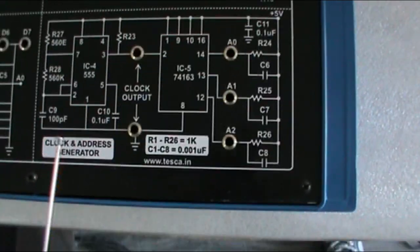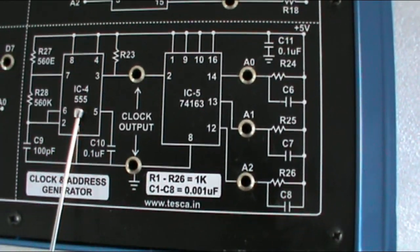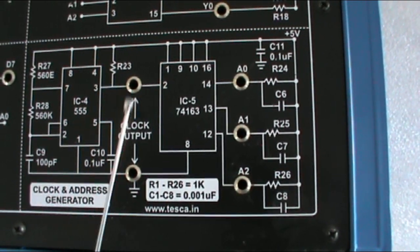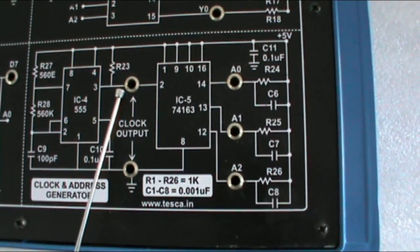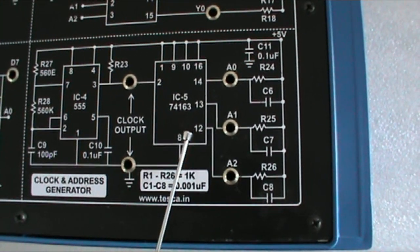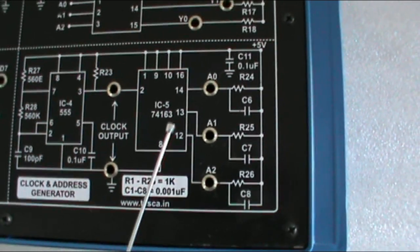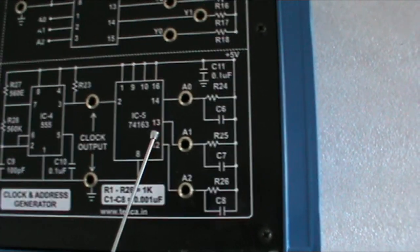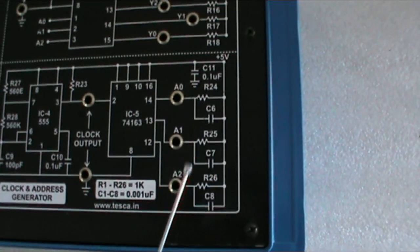This section is the clock and address generator. This is the 555 IC, which generates the clock output. The clock output is available between these two terminals. This is the address generator IC 74163, and the address signal is available at terminals A0, A1, and A2.